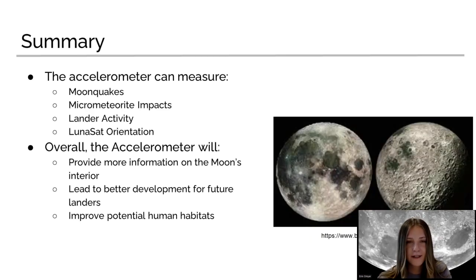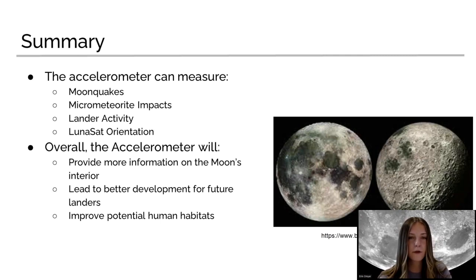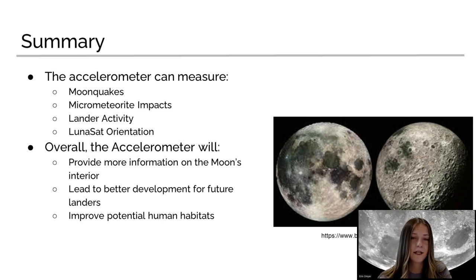In summary, the accelerometer can measure moon quakes, micrometeor impacts, lander activity, and tell us the LUNASAT orientation. Overall, the accelerometer will provide more information on the moon's interior, lead to better development for future landers, and improve potential human habitats.